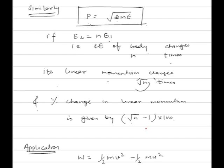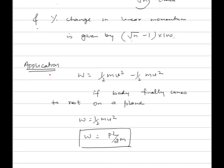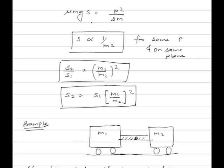Now we discuss more applications of the work-energy theorem. Work done is equal to change in kinetic energy, that is final minus initial. If a body comes to rest on a plane, work done is equal to half m v squared minus half m u squared, where final kinetic energy is zero, so work done equals half m u squared. Since m into u is also called initial momentum p, work done equals p squared upon 2m. Work done by friction force is given by mu mg into s, which equals p squared upon 2m.